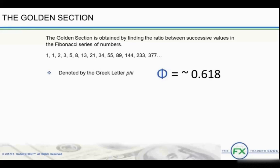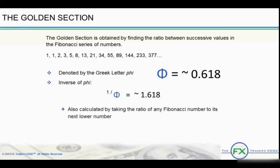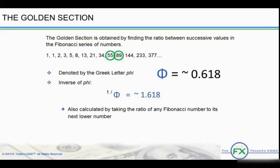There are also other properties of these numbers worth noting. 1 over phi is the inverse of 0.618, which is 1.618. This is also calculated by taking the ratio of any number to its next lower number. For example, 34÷21=1.619, 55÷34=1.618, and 89÷55=1.618. The higher the numbers go, the closer the ratio is to 1.618.